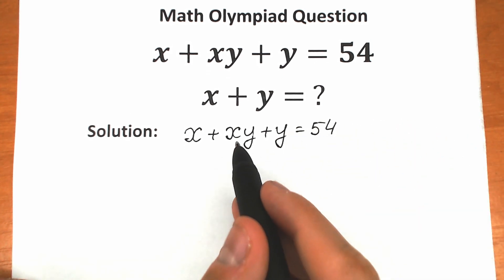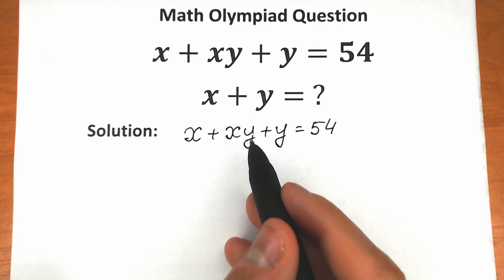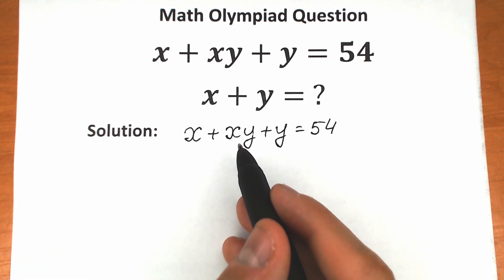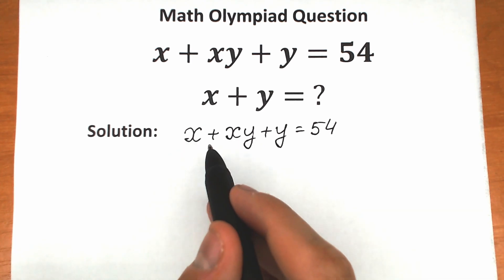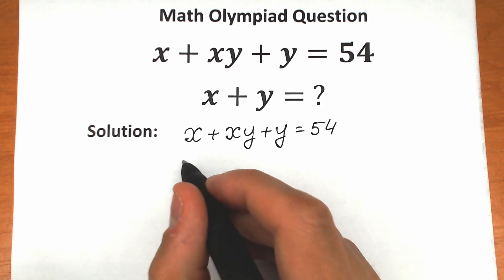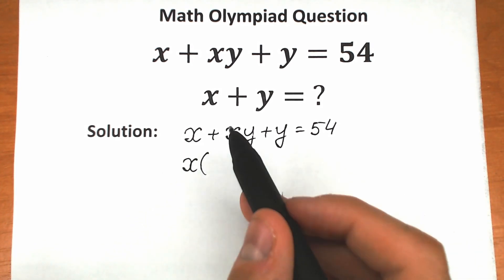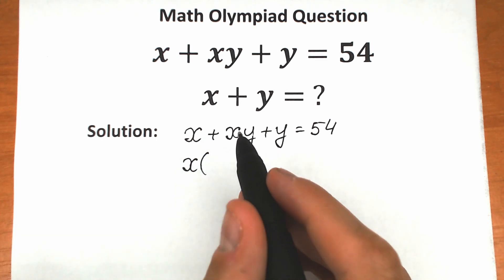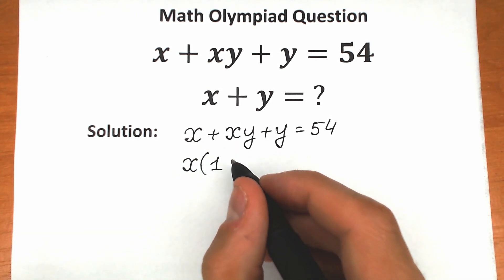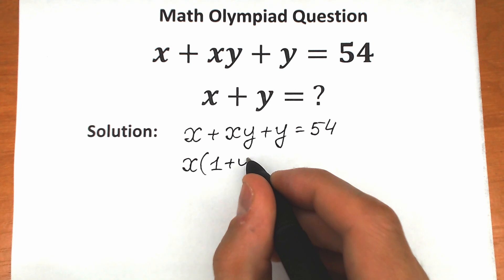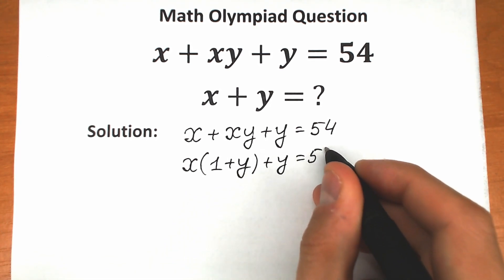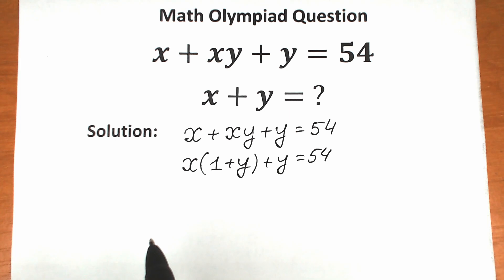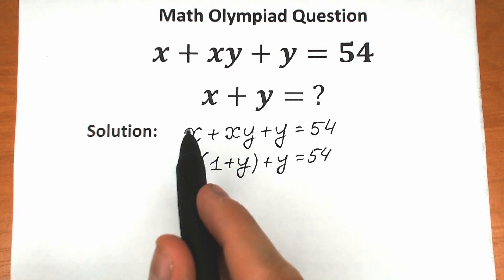First, I look at the expression xy plus y. We can easily factor x from this expression. So let's do it with x. We have x times 1 plus y, and plus y equals 54. So our first step, we just factor x from the expression x plus xy.